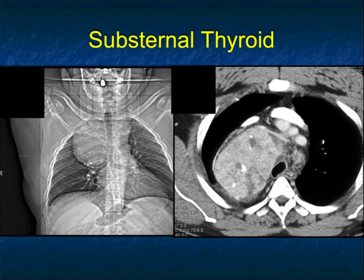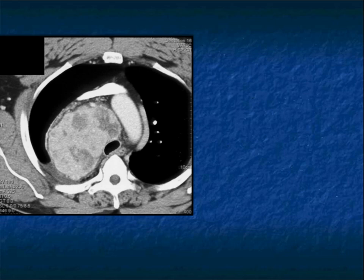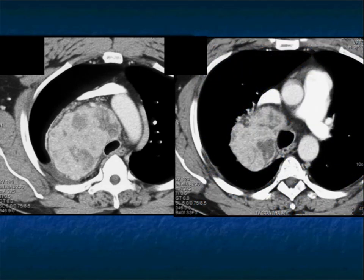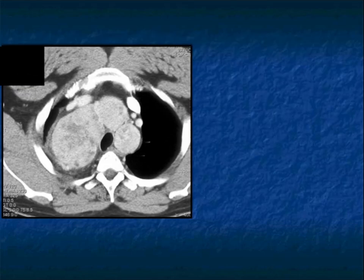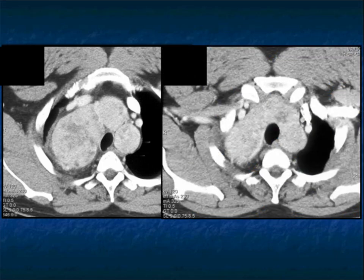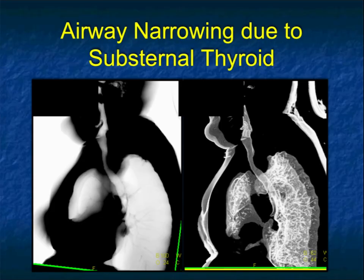Here, unlike the last case which was for the most part surrounding the trachea, this one is more compressing from right to left. Not quite as bad as the prior case, but patients can be symptomatic, and it can be confused with other causes of mediastinal masses, particularly on a chest x-ray. A very nice example of substernal extension of the thyroid going mainly on the right side, causing narrowing of the trachea.